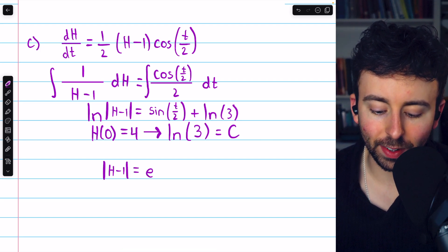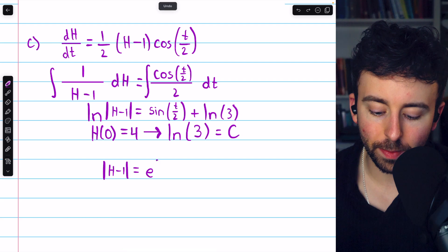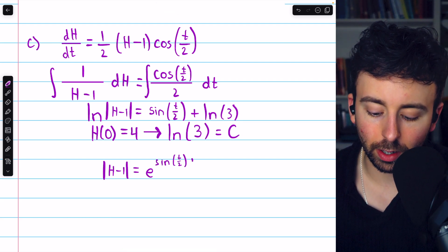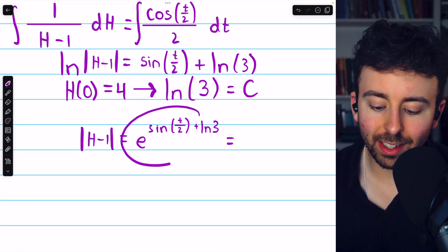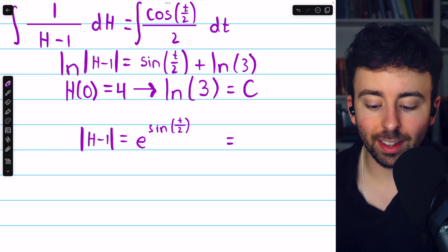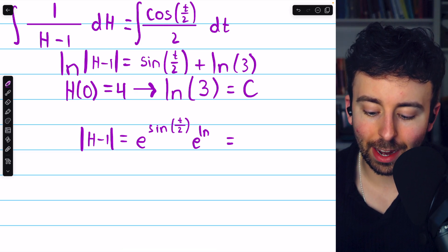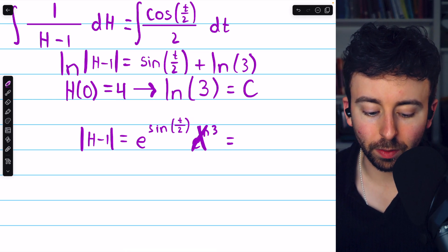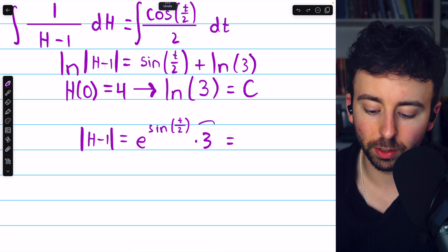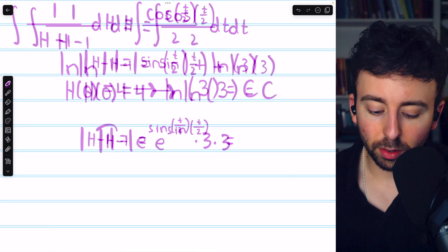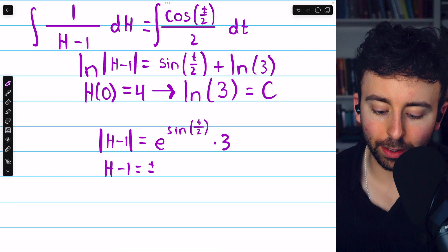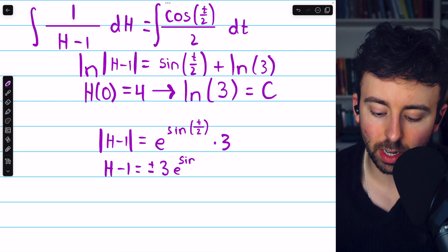And then, on the right, we're going to have e to the power of everything that's on the right. So, e to the [sine of (t/2) plus the natural log of three]. But, by our exponent rules, this is the same as e to the sine of (t/2) times e to the natural log of three. But, e to the natural log of three is just three because e and ln cancel out. So, this is just e to the sine of (t/2) times three. To get rid of the absolute value, we could say that h minus one equals plus or minus three times e to the sine of (t/2).